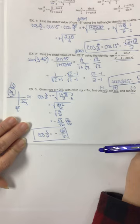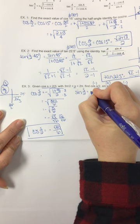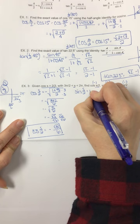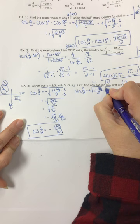For sine of s/2, it's positive in quadrant 2: positive square root of 1 minus cosine of s, which is 2/3, over 2.